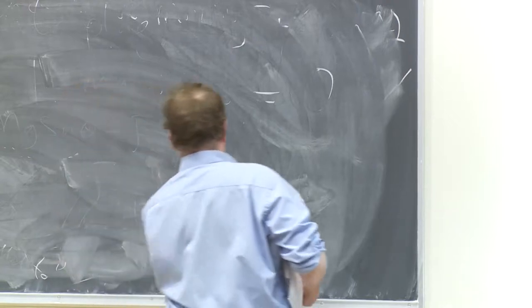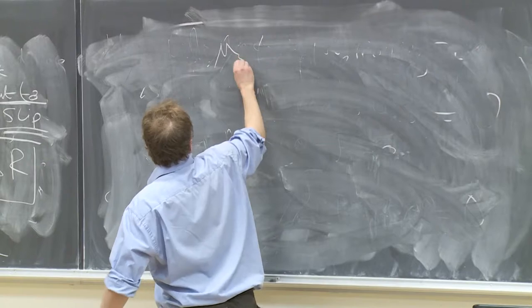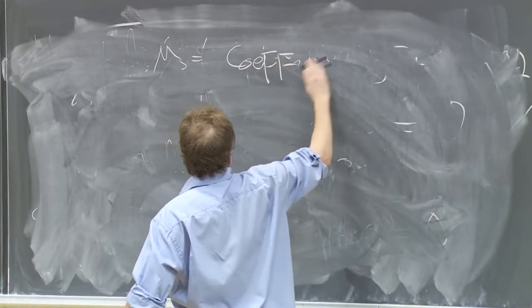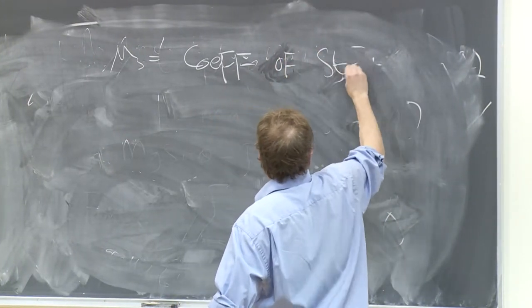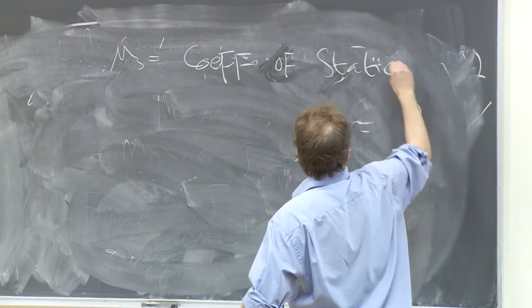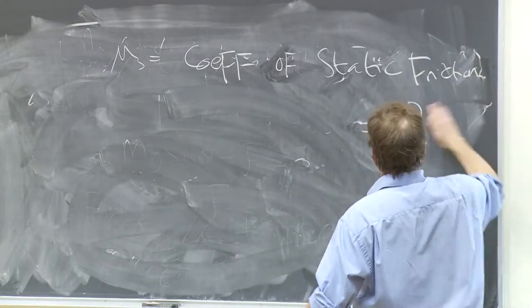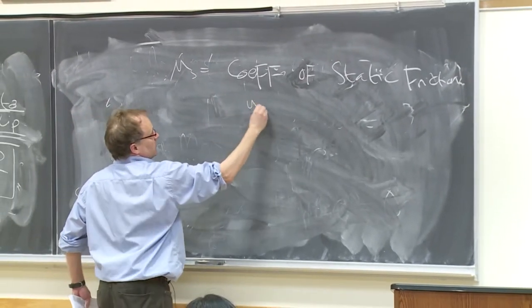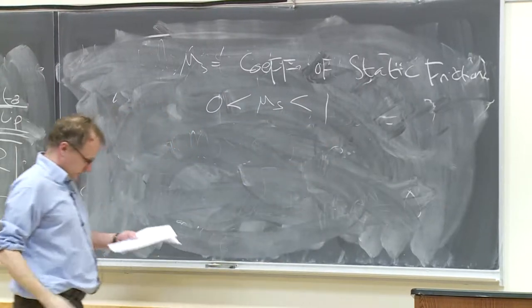So, almost done. So mu s is the coefficient of static friction. Mu s is between, typically it would have a value between zero and one.